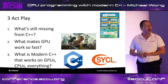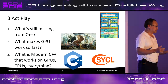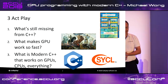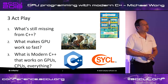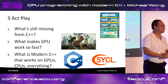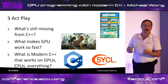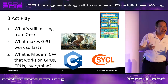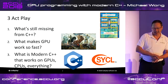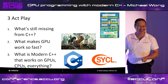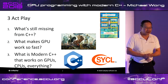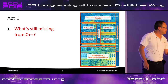I like to break my talks into three parts to avoid cognitive overload. Today we're going to talk about: what's still missing in C++, what makes GPUs work so fast — the picture here is from my LLVM keynote where I discuss the problems of heterogeneous programming, hence the four horsemen of the apocalypse — and what modern C++ can do that works on GPUs, CPUs, and pretty much everything.